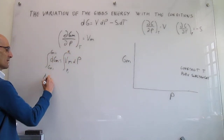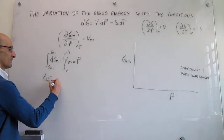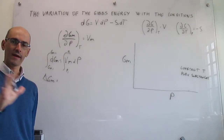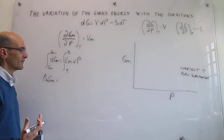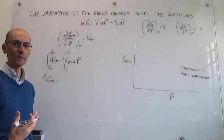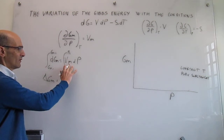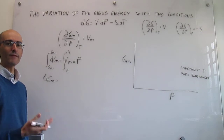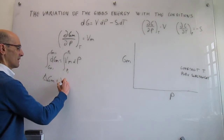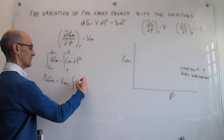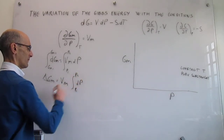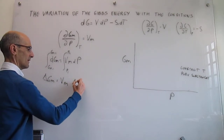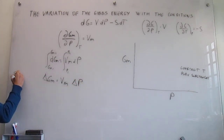The left-hand side of the integral is simply ΔGm. For the right-hand side, we consider whether we have a gas, a solid, or a liquid. The compressibilities of solids and liquids are really, really small, meaning the molar volume does not depend dramatically on pressure. If that's the case, then we can factor it out of the integral, and we just have to solve the integral of dP from P1 to P2, which equals ΔP.